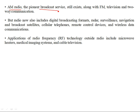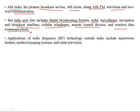Depending on the frequency, different RF applications exist. AM radio — the pioneer broadcast service — still exists along with FM, television, and two-way communications in the radio spectrum. Radio now also includes digital broadcasting formats, radar, surveillance, navigation, and broadcast satellites at higher frequencies. We have cellular telephones operating in GSM bands, remote control devices, wireless data communications with less fading and higher bandwidths for services like video communications. Applications outside radio include microwave heaters, medical imaging such as MRIs, and cable television.